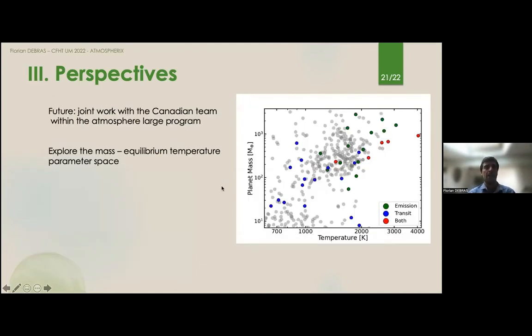Last but not least, we have gathered this huge French team, and the future is to try to do the same with the Canadian team around SPIRou. There has been a submission of an Atmospheres large program if it's accepted. The idea is to explore the mass and equilibrium temperature parameter space, and to find out whether we can find some trends or some differences in the atmospheric physics of these planets. You see that the planets in color are the planets that are proposed in this large program, and they really sample this space, and there's a lot of physics to be done here.